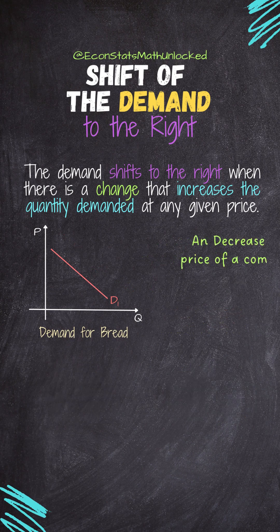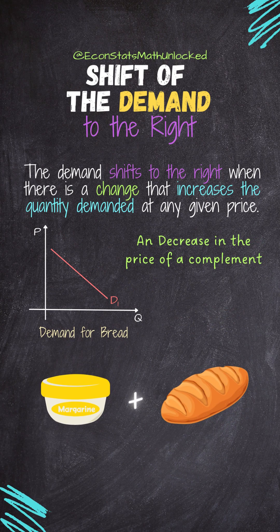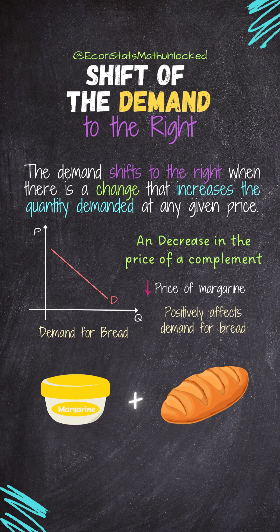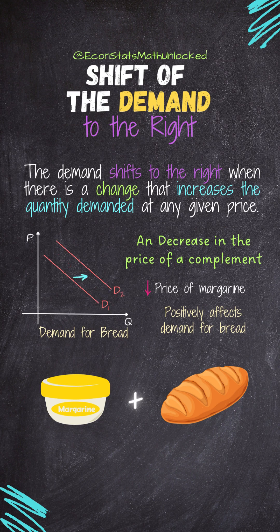A decrease in the price of a complement good — since complement goods are consumed together — a lower price of one increases the demand for the other, shifting demand to the right.